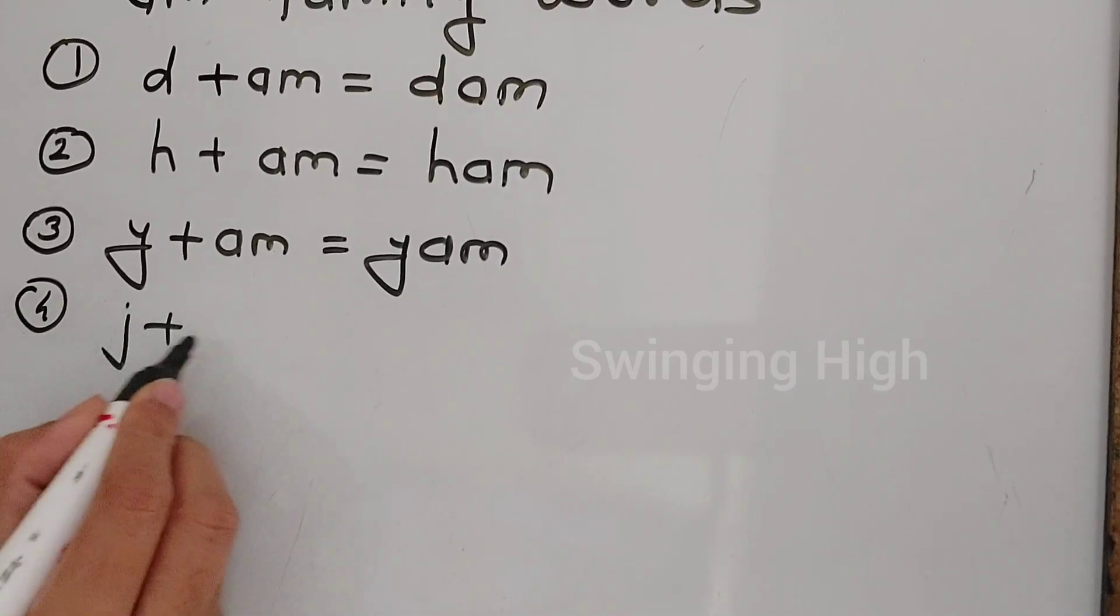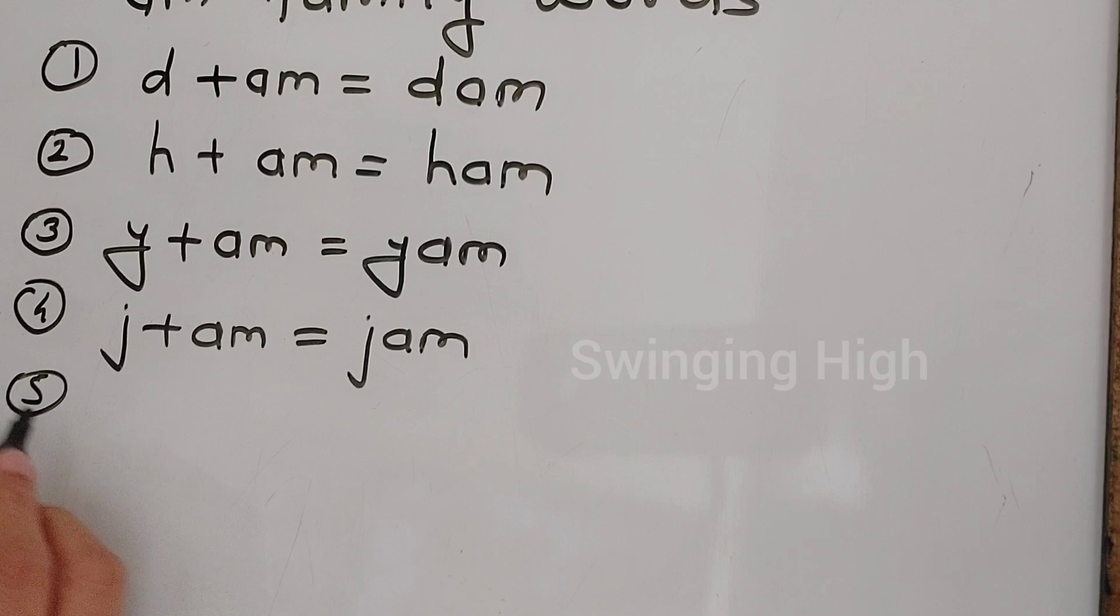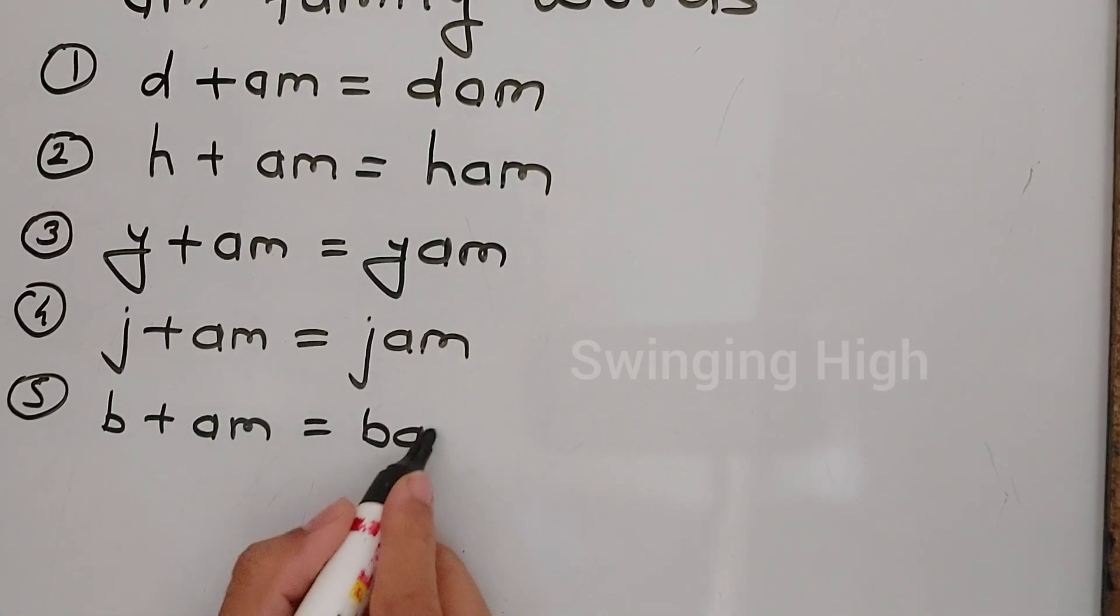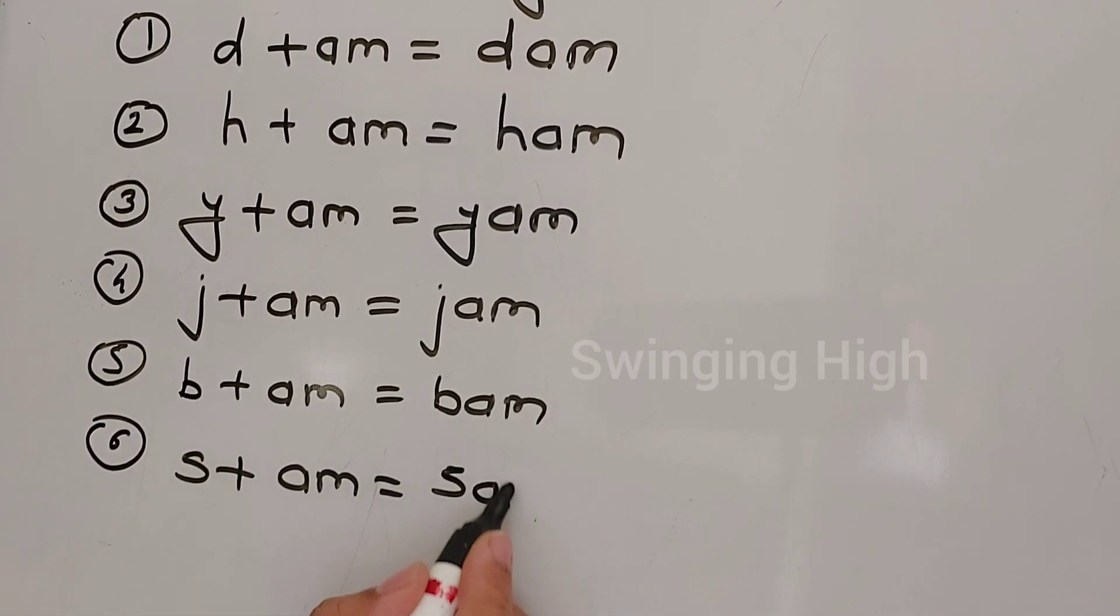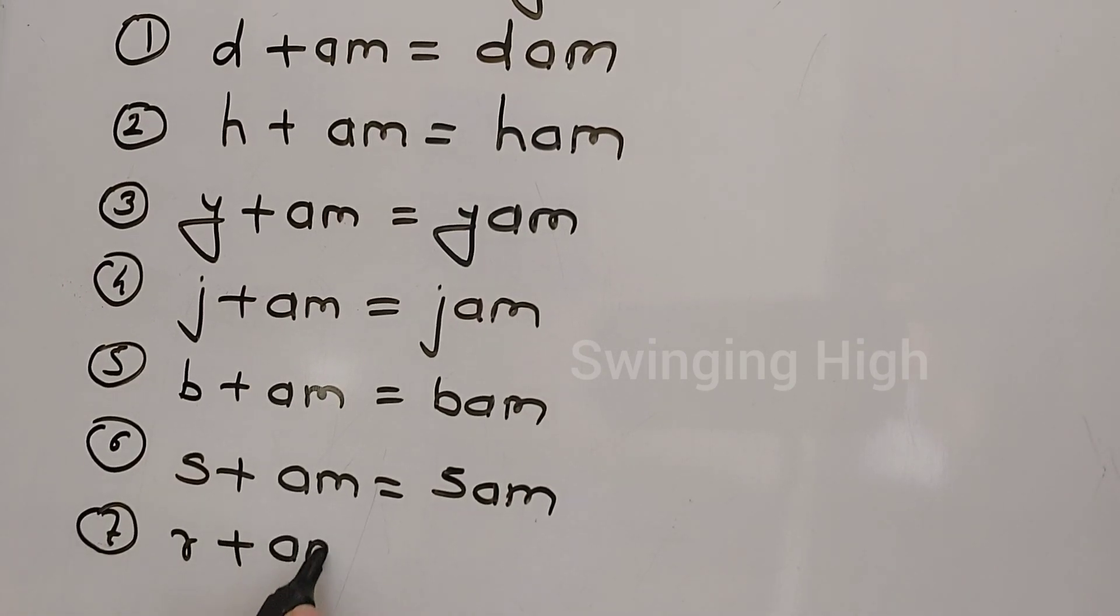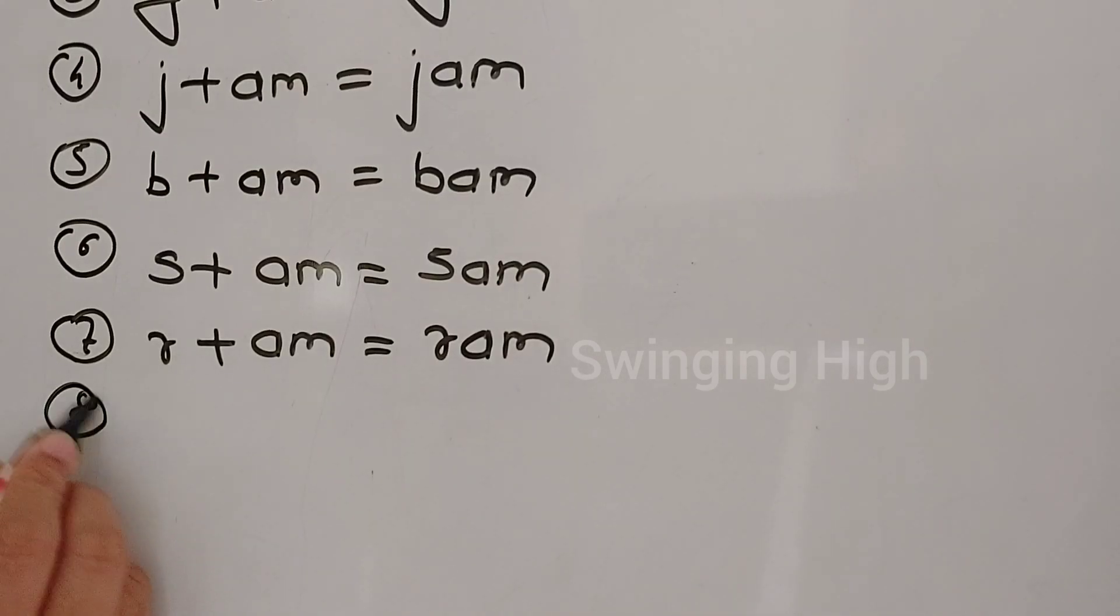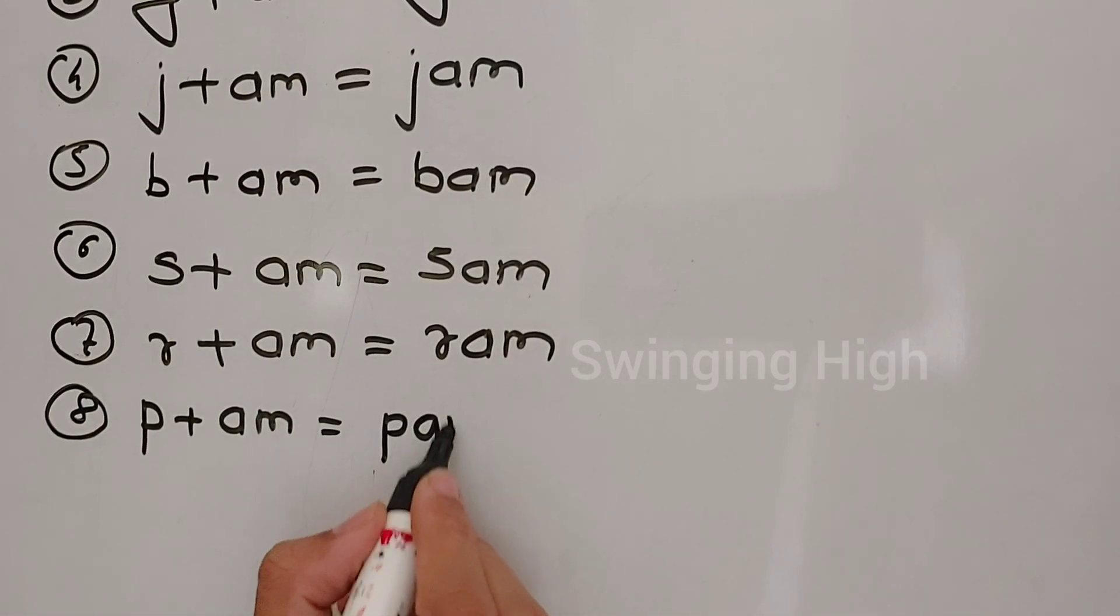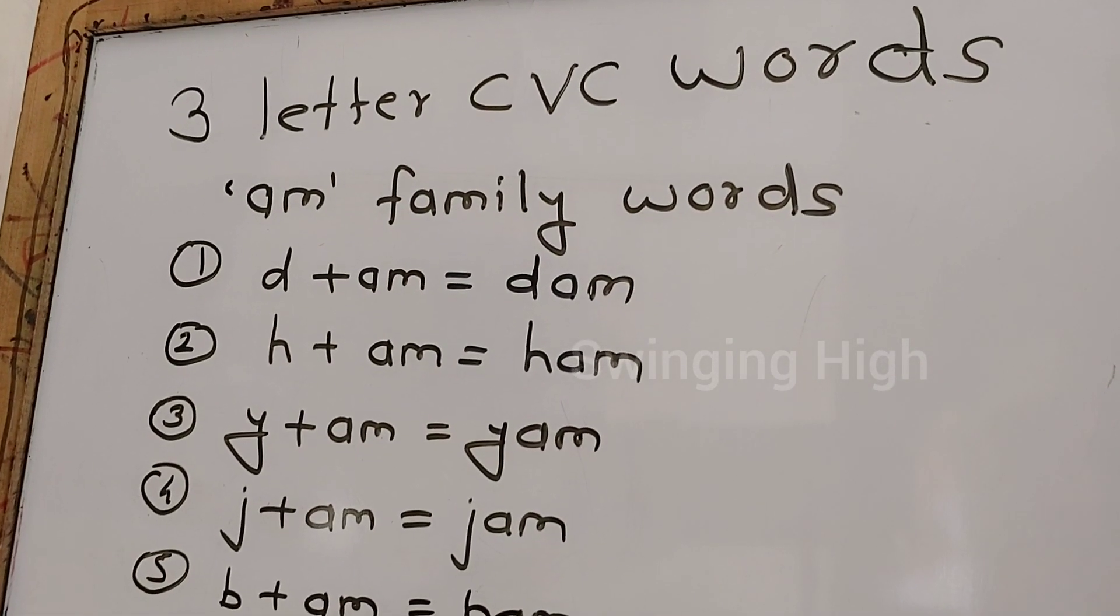J-am, jam. B-am, bam. S-am, sam. R-am, ram. P-am, pam. These are the am family words.